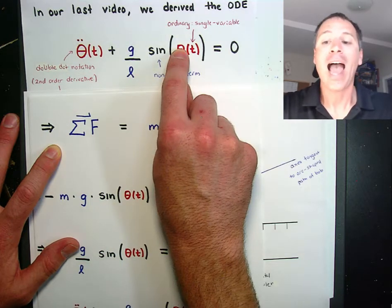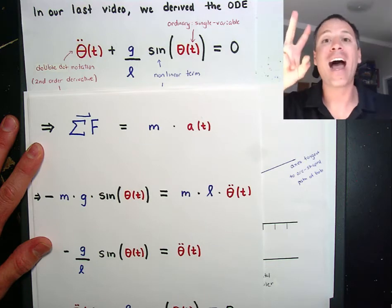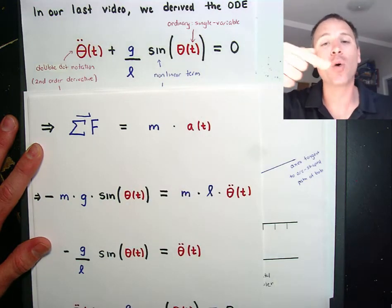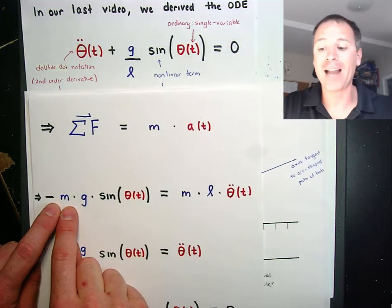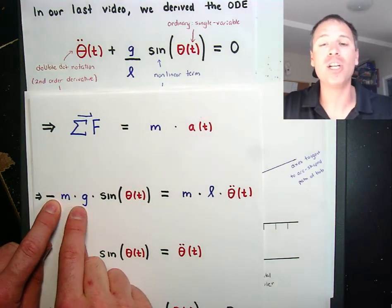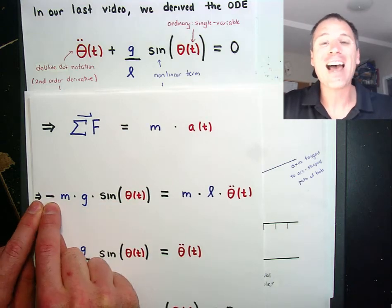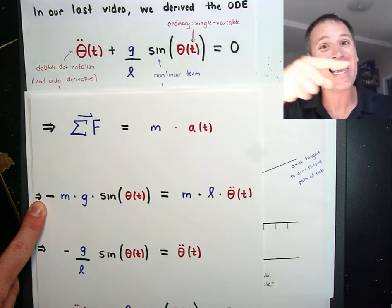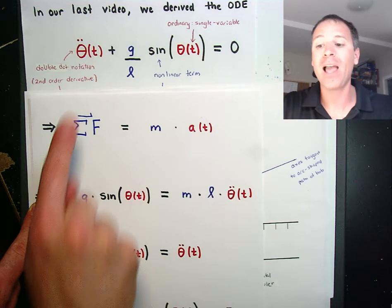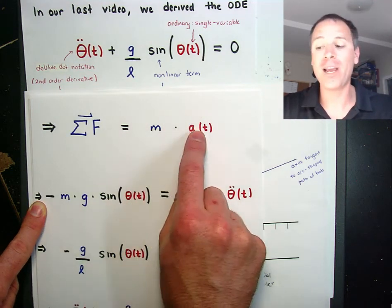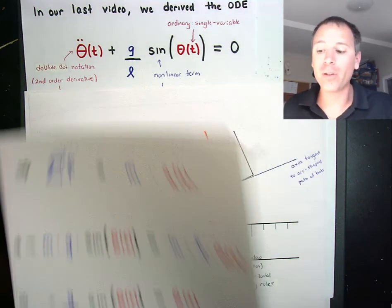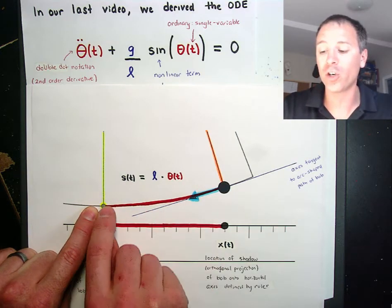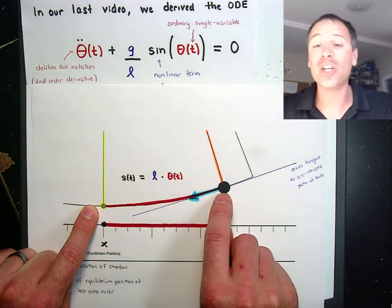Specifically, this term had to do with the only force that affected the motion of our pendulum: the tangential force — the component of the force of gravity in the tangential axis to the arc-shaped path. That force vector had a magnitude of m times g times the sine of negative theta. We oriented that force vector to be in the opposite direction of our acceleration, so that's where the negative came from. This term came from looking at the single tangential force along the tangent-line axis to the path of motion.